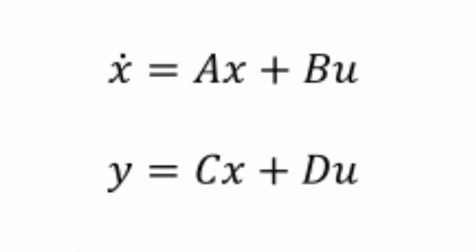Where A is the system matrix, B is the input matrix, C is the output matrix, and D is the feed forward matrix. The state variables are the vector x, the input is the scalar or vector u, and the output is the scalar or vector y.